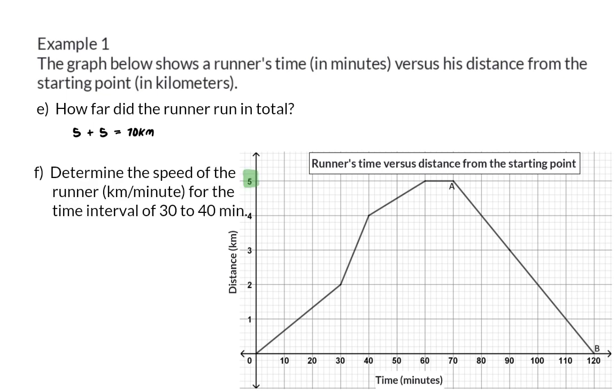Question F: Determine the speed of the runner in kilometers per minute for the time interval of 30 to 40 minutes. We need to calculate the speed in kilometers per minute, so the calculation will be to divide the total amount of kilometers by the minutes that he ran. Here, we can see that he started at 2 kilometers and ended at 4 kilometers, which means that in this time interval, he ran 2 kilometers. The number of minutes is from 30 to 40 minutes, which is 10 minutes. And now, 2 divided by 10 is 0.2 kilometers per minute.